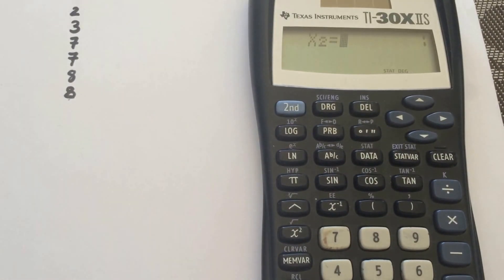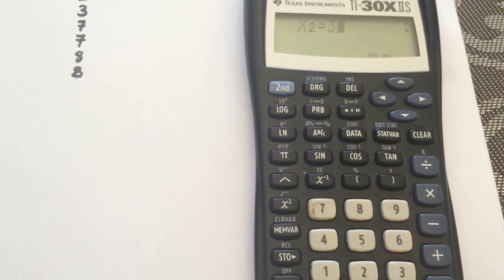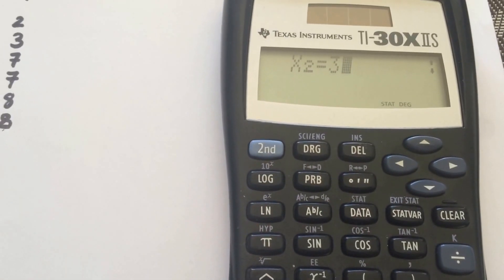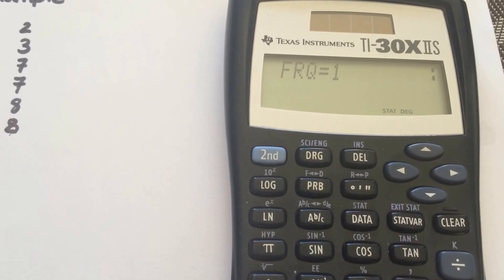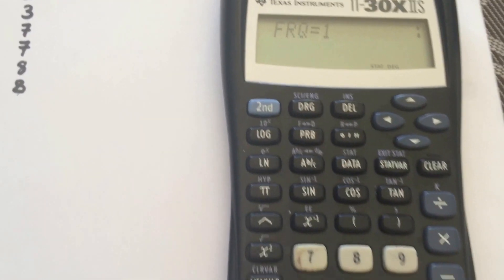Scroll down. It's asking for the second x value. So enter 3. Scroll down. Again, your frequency of that is 1. So hit enter.